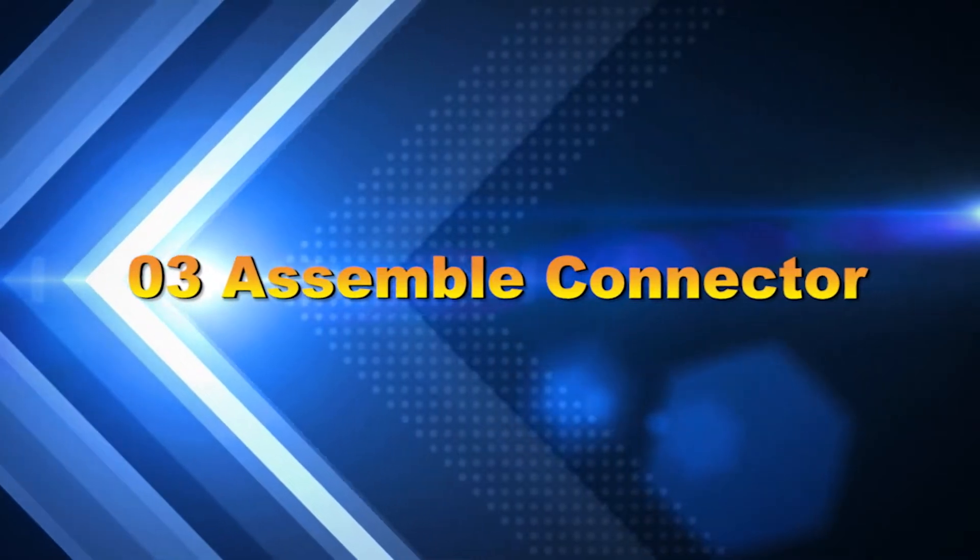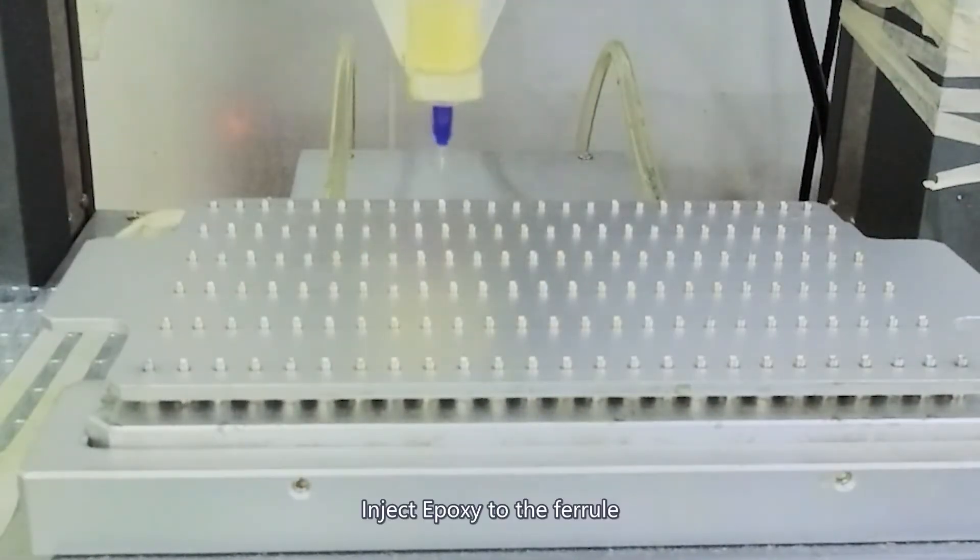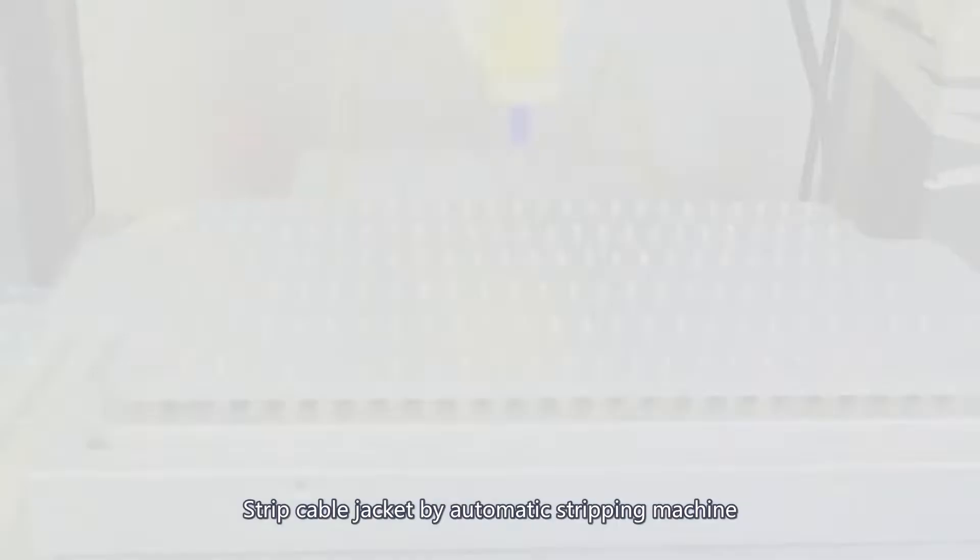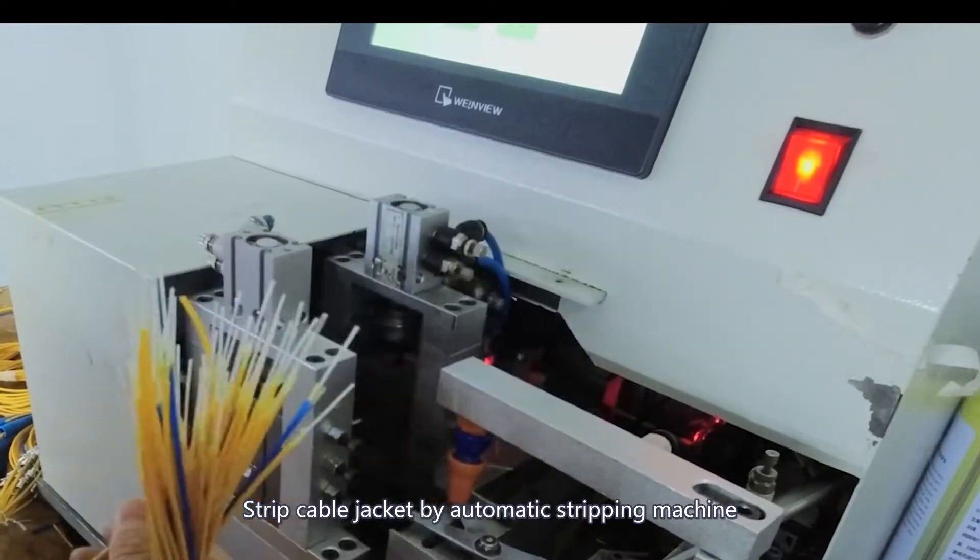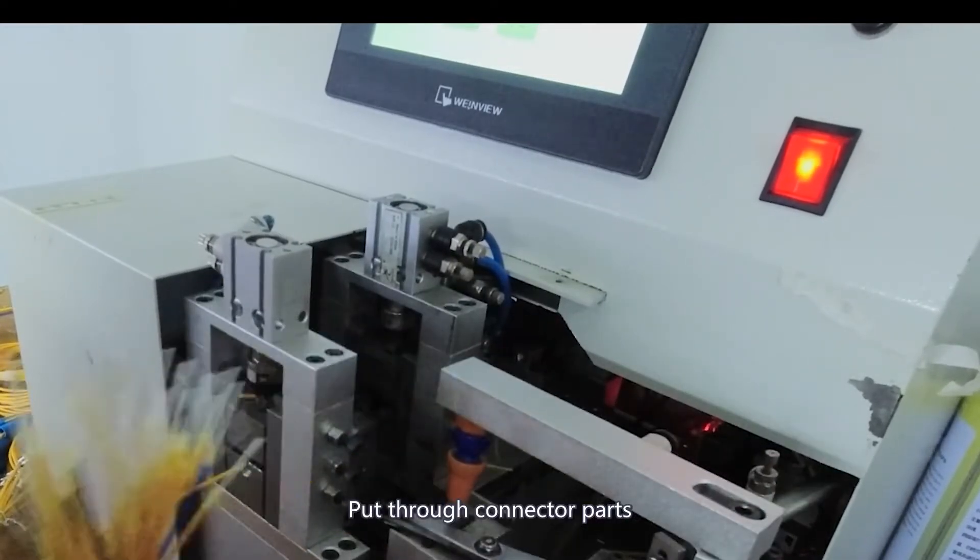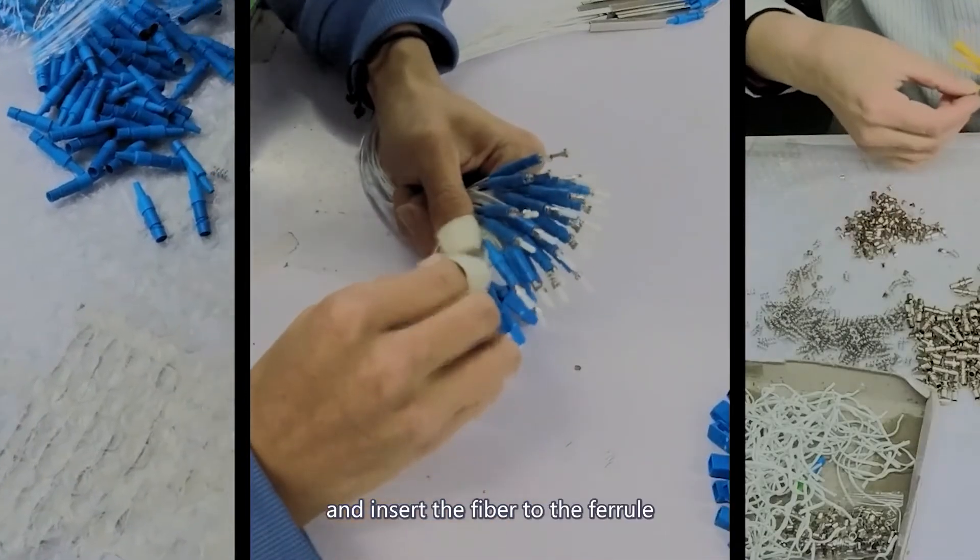Part 3: Assemble connector. Inject epoxy to the ferrule. Strip cable jacket by automatic stripping machine. Pull through connector parts and insert the fiber to the ferrule.